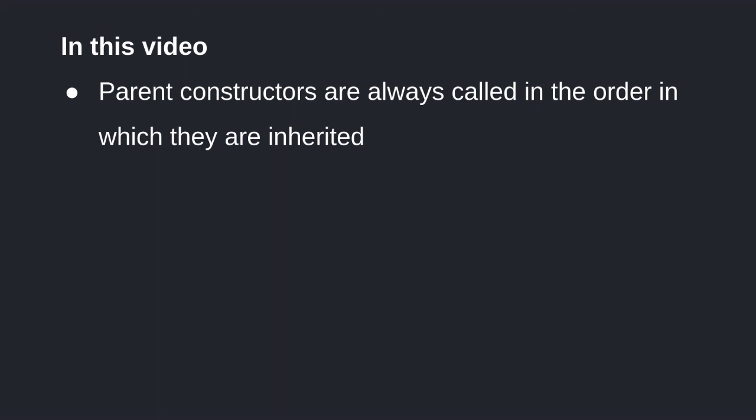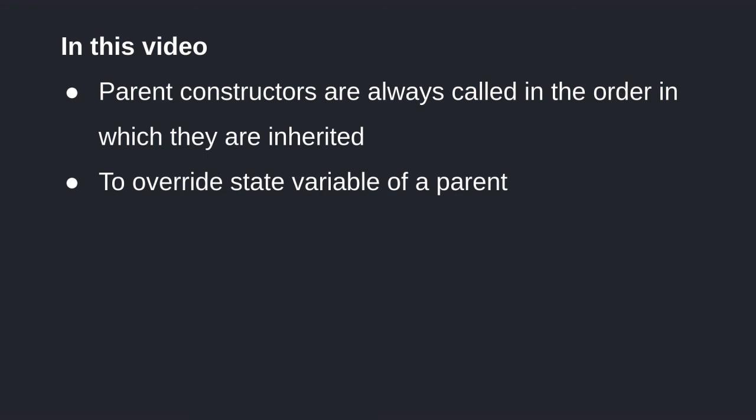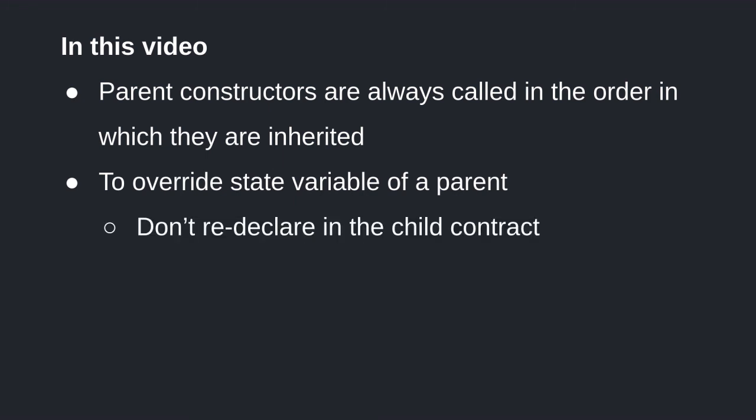In this video, we went over how to call constructors of parent contracts. Parent constructors will always be called in the order in which they are inherited, and not in the order they are called inside the constructor of a child contract. And to override the value of a state variable in a parent contract, don't redeclare it in the child contract — instead, just reassign it. That's the end of this video. Any questions or feedback, please put them in the comments below. Thank you so much for watching and have a nice week.